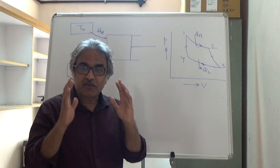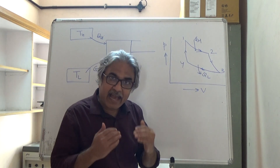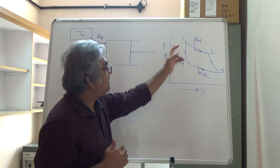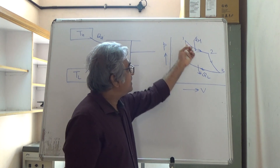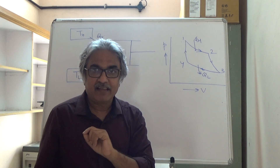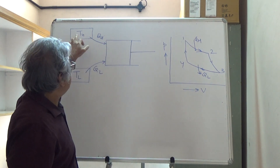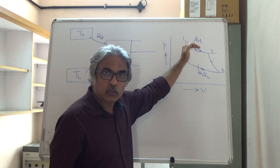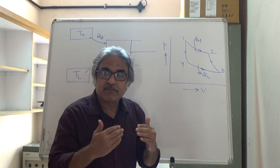The source temperature is a constant value, Th. Throughout 1 to 2, the gas is also receiving heat at the same temperature T suffix H. That means the temperature of the gas here is also T suffix H. So this process is reversible as well as isothermal. If it is not isothermal you can't have this, because heat is coming from the source which is at temperature Th, so the gas also has to receive heat while itself being at the same temperature. Only then is reversible heat transfer possible.